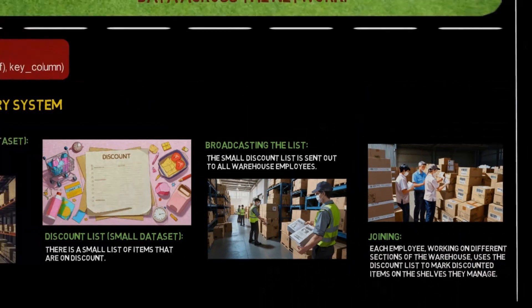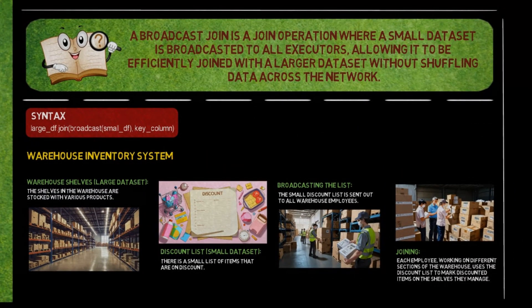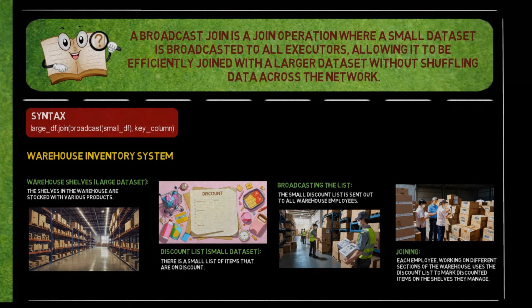This example illustrates how a Broadcast Join in Spark works by distributing a small dataset, the discount list, to all workers (executors), allowing them to efficiently join it with a larger dataset, the warehouse shelves, without excessive data shuffling.